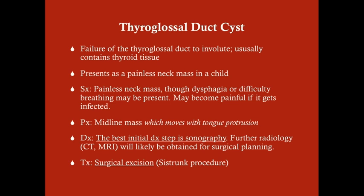Once you suspect a thyroglossal duct cyst on physical examination, the next best step is sonography—to confirm it is indeed a cyst. It will be hypoechoic on ultrasound. From there, you refer to pediatric surgery for surgical excision, a procedure called the Sistrunk procedure. The surgeon may want additional imaging such as CT or MRI for planning, but the best initial diagnostic step is sonography and the treatment is excision—because the cyst can become infected, enlarge, and cause complications.